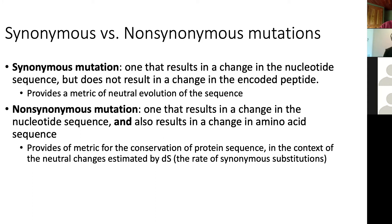Synonymous mutations are those where, if you have synonymous mutations in the nucleotide code, there's really no resulting change in the amino acid sequence — the protein remains exactly the same. So synonymous mutations are basically a metric of sequence divergence with no selection, because the protein remains exactly the same.